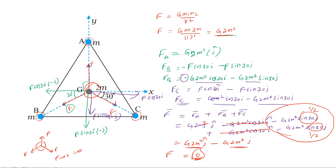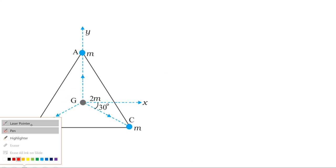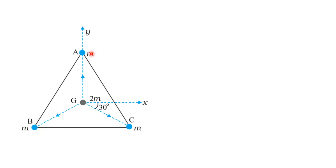For the second part, the mass at vertex A is doubled to 2M. The force FA equals G times M1 times 2M divided by R squared, with the centroid distance equal to 1 meter, so divide by 1 squared.